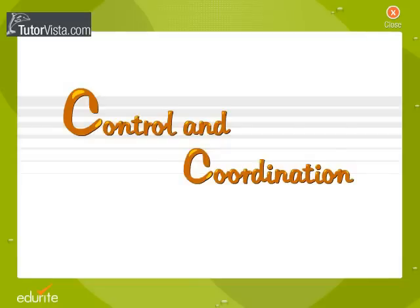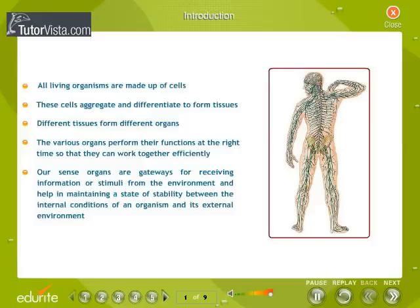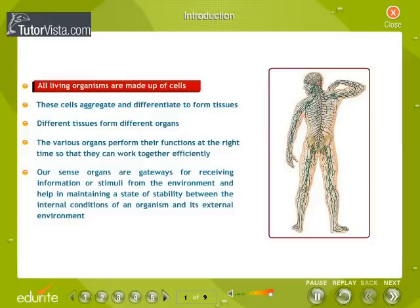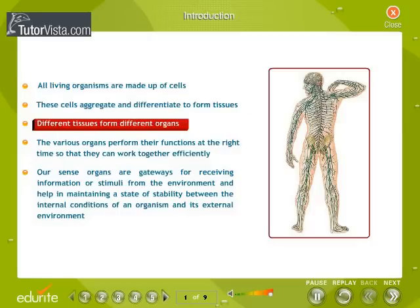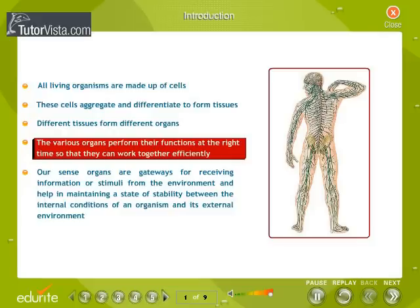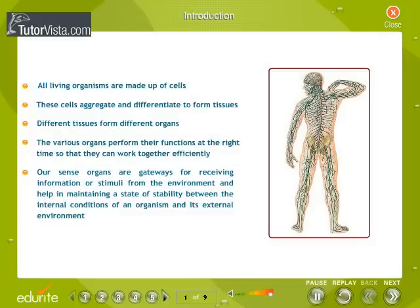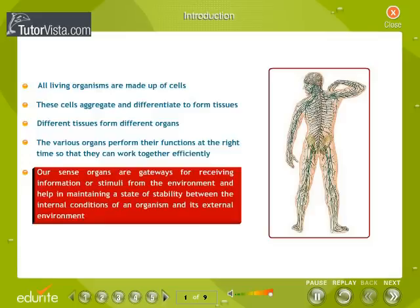Control and Coordination. All living organisms are made up of cells. These cells aggregate and differentiate to form tissues. Different tissues form different organs. The various organs perform their functions at the right time so that they can work together efficiently. Our sense organs are gateways for receiving information or stimuli from the environment and help in maintaining a state of stability between the internal conditions of an organism and its external environment.